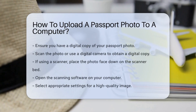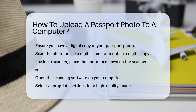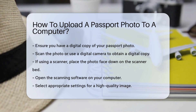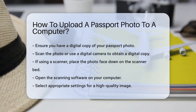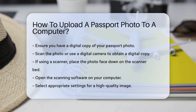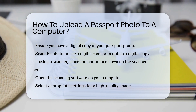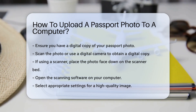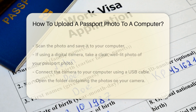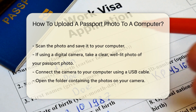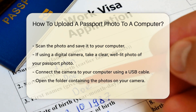First, ensure you have a digital copy of your passport photo. This can be done by scanning the photo or using a digital camera. If you use a scanner, place the photo face down on the scanner bed, open the scanning software on your computer, select the appropriate settings for a high-quality image, scan the photo and save it to your computer.